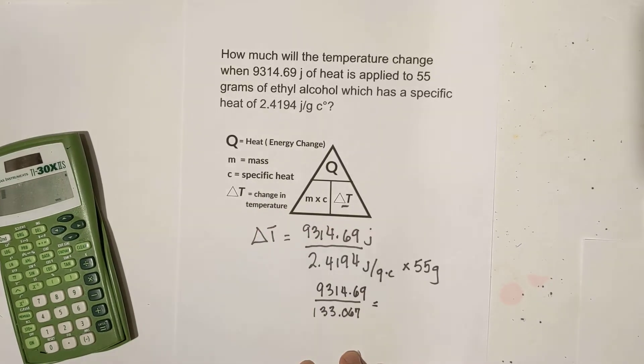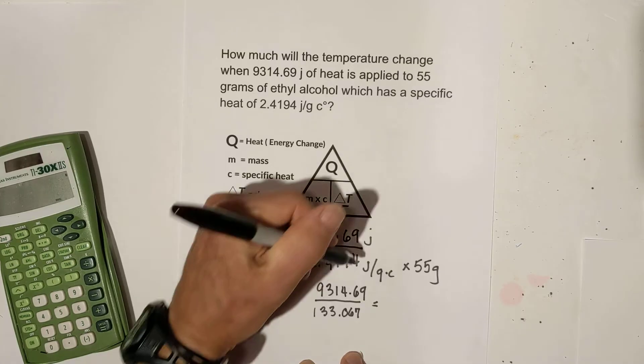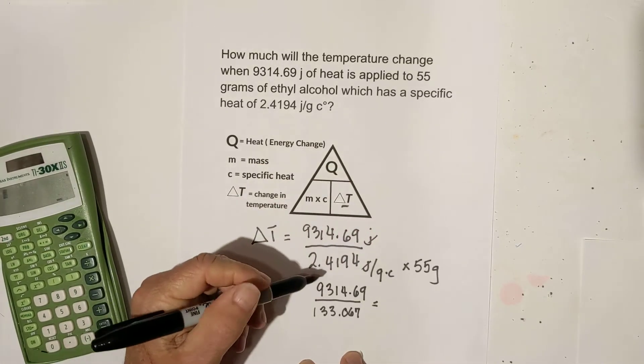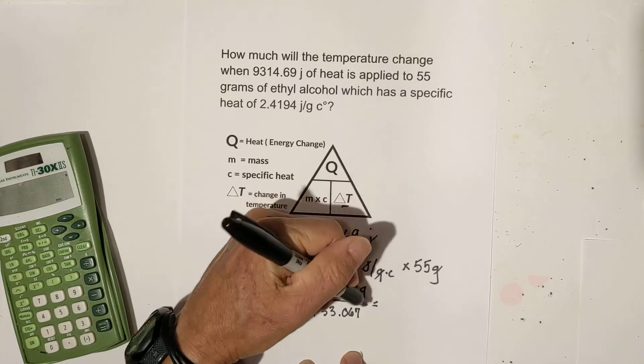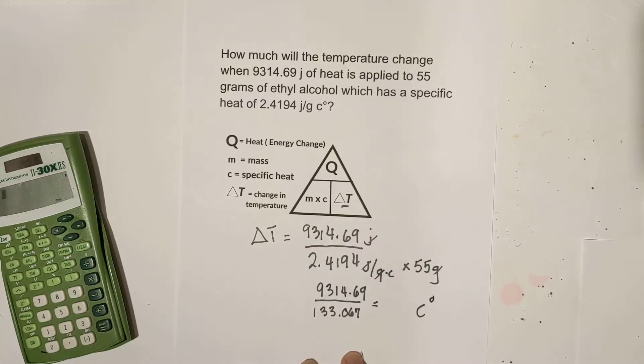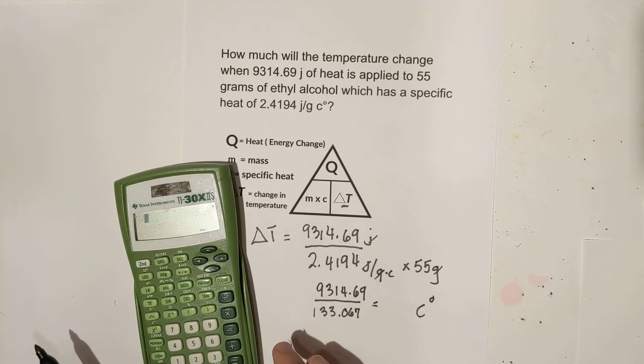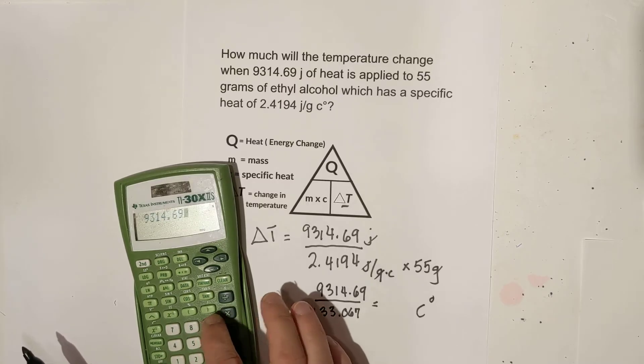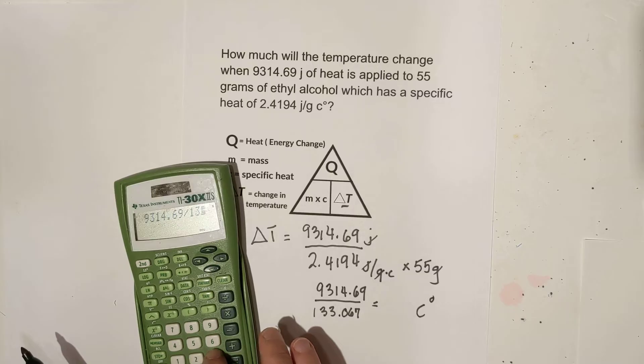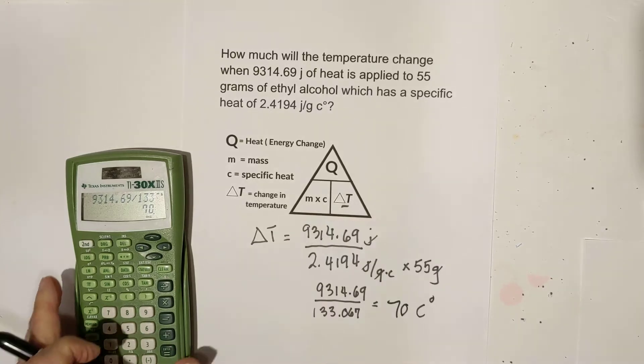And so now all we do is we just bring Q down. Before we do that let's cancel units. The joules are going to cancel. This grams will cancel because technically this is on the bottom and all we're left is Celsius. And so now I just divide 9,314 divided by 133.067 and that equals 70.